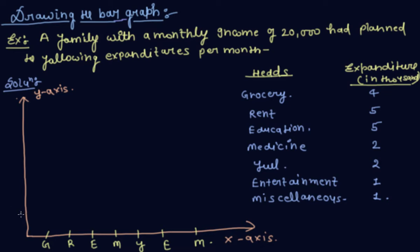The expenditure values go on the vertical axis. Since the maximum expenditure is 5,000, we can choose the scale on the y-axis as one unit equal to 1,000 rupees. So this is 1, 2, 3, 4, 5, 6, 7.